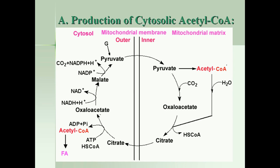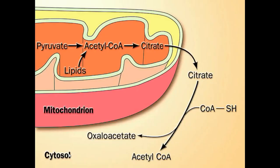In the cytosol, citrate cleavage occurs to give oxaloacetate and acetyl-CoA. This acetyl-CoA is released by the enzyme citrate lyase, with the expenditure of ATP into ADP and inorganic phosphate. This acetyl-CoA, synthesized after the cleavage of citrate into oxaloacetate and acetyl-CoA, is now ready to synthesize fatty acids in the cytosol.